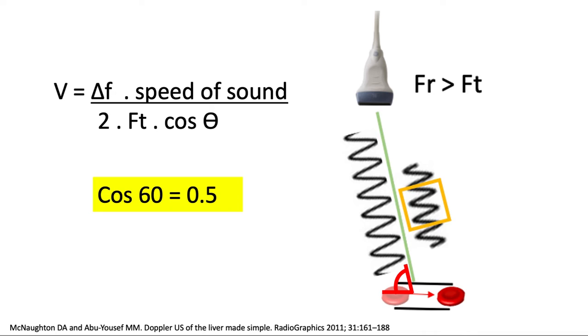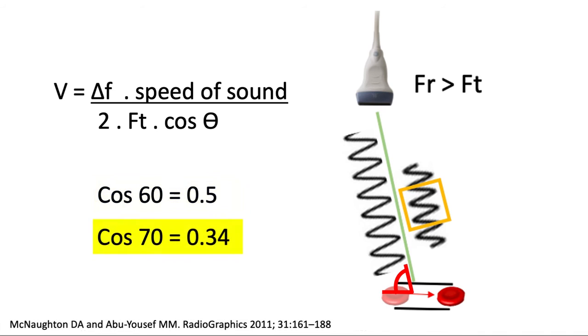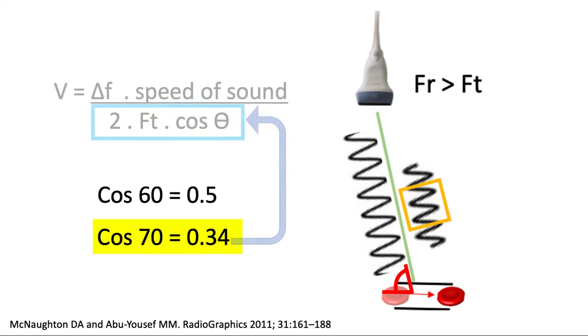A cosine of 60 is 0.5. When we increase it, let's say to 70 degrees, the cosine of 70 degrees is 0.34. This smaller value gives us a small divisor, and that would give us a velocity that is much higher than the real velocity.